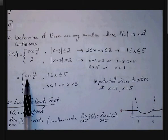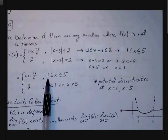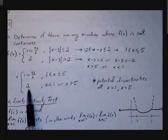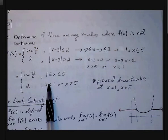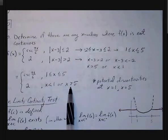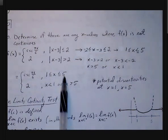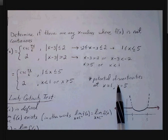Now think about cosecant. Cosecant does have vertical asymptotes, but they only exist where sine equals 0. Sine equals 0 at 0 and pi, and between pi over 6 and 5 pi over 6, cosecant will be continuous. We also have y equals 2 where x is less than 1 or greater than 5. For the piecewise function, the two x values where there could be discontinuities are at x equals 1 and x equals 5, because the two different functions will either connect or disconnect at those points.